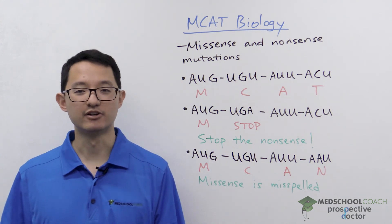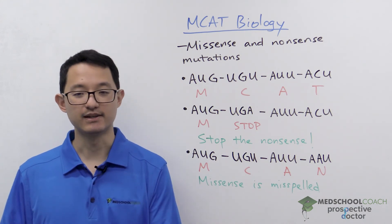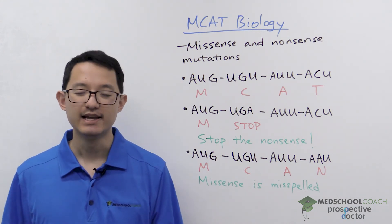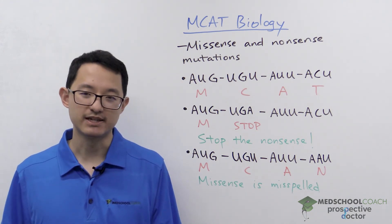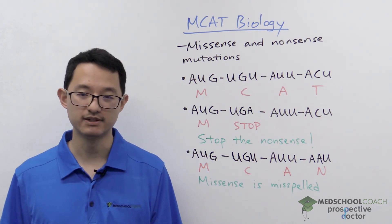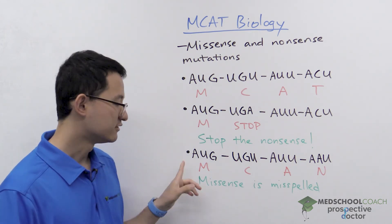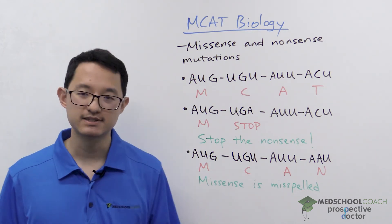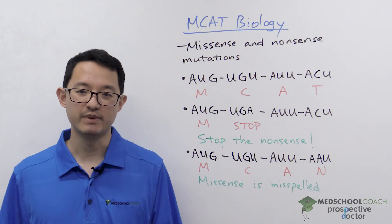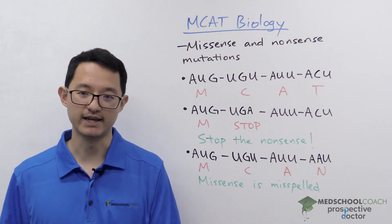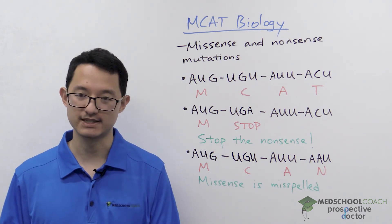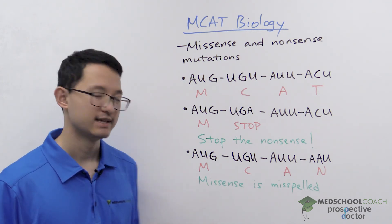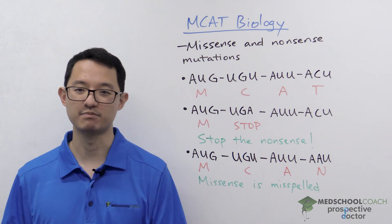A good way of memorizing missense mutations is that missense mutations are misspelled. You did not get the right peptide sequence — it's misspelled by one letter. So that's the mnemonic: missense is misspelled.